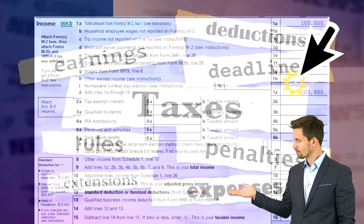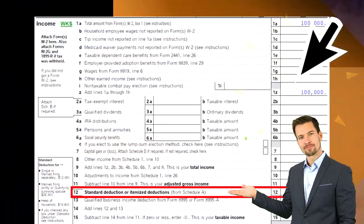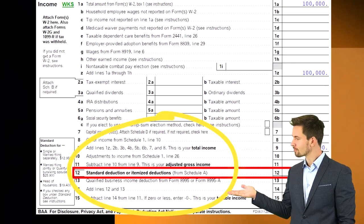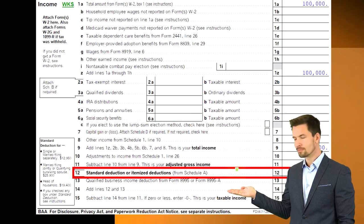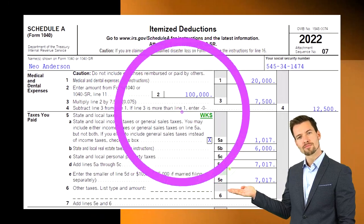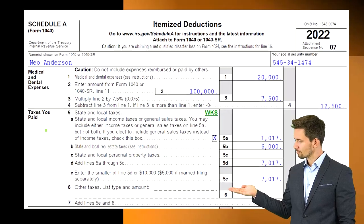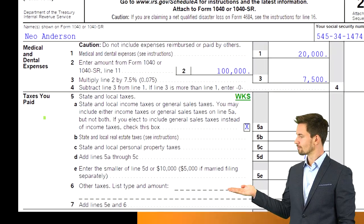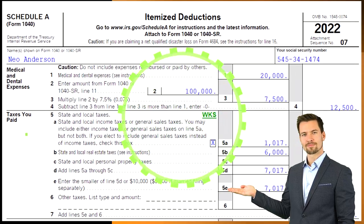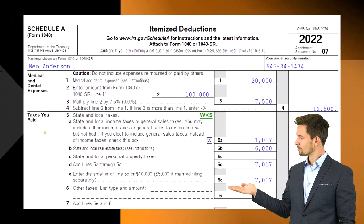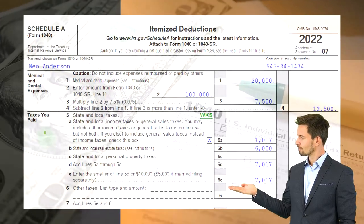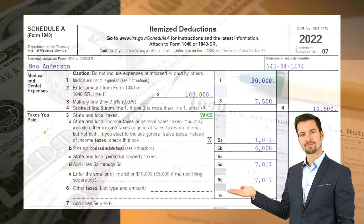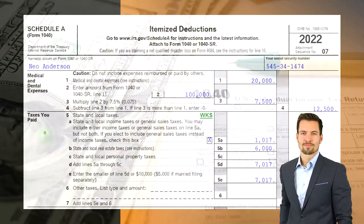We're now focusing in on some of those itemized deductions. On page one of Form 1040, line 12 is the standard deduction or itemized deduction — this is Schedule A. We're looking at the itemized deductions related to taxes. When thinking about what pushes people over to itemizing, usually it's home ownership, because that leads to mortgage interest and also property taxes. Those are the big two, and we're looking at the taxes section here, which includes property taxes.